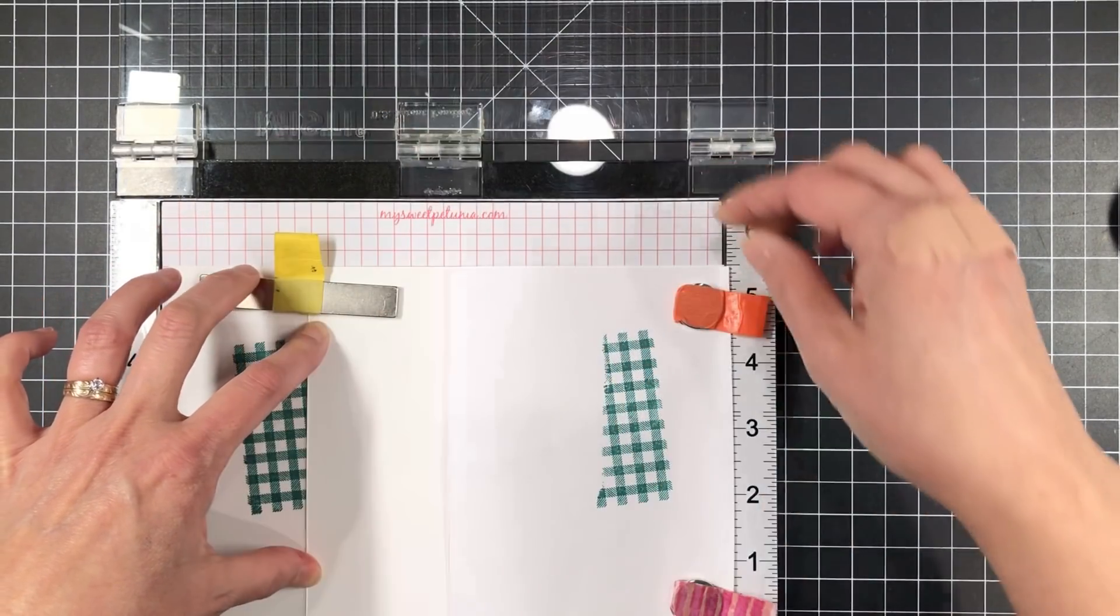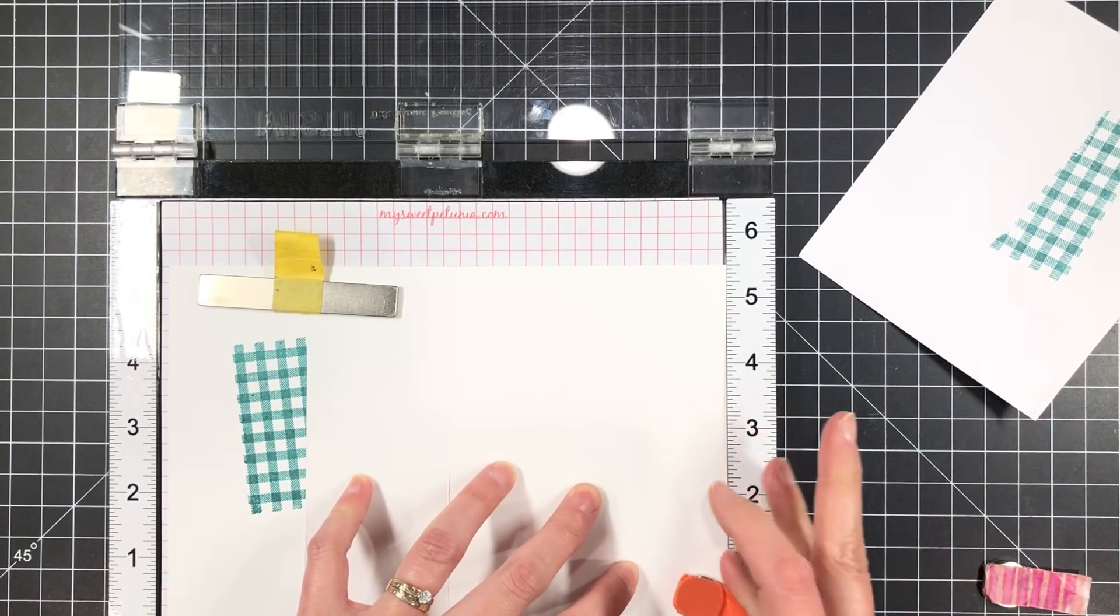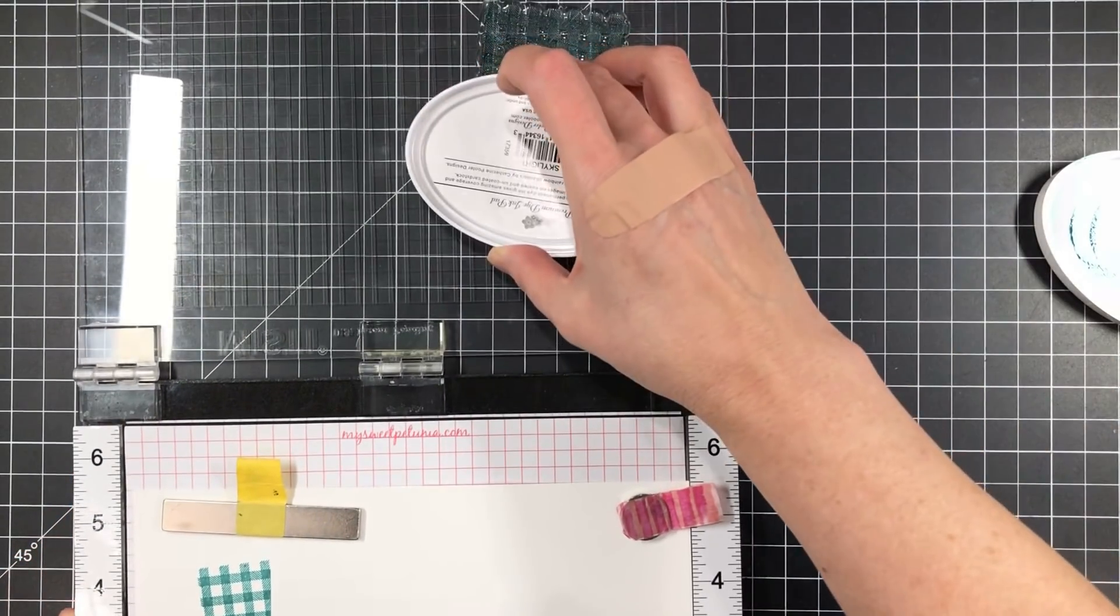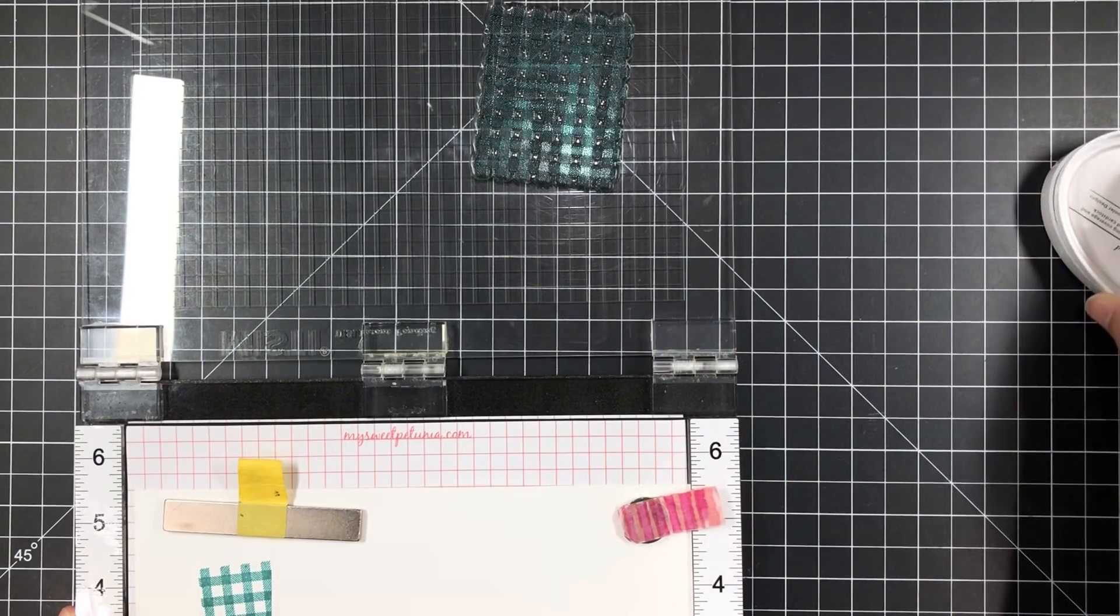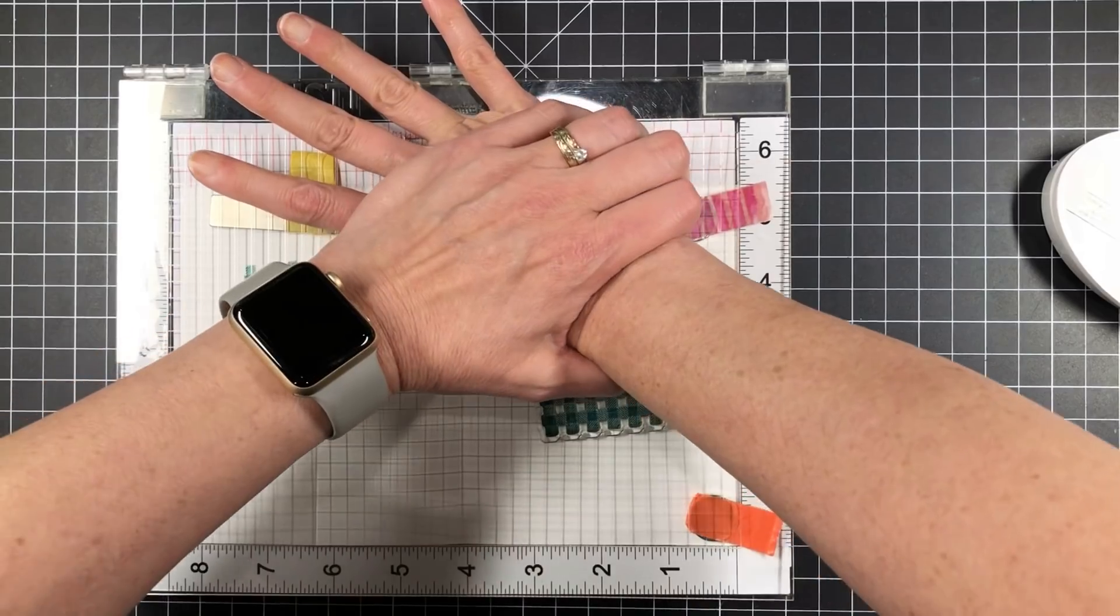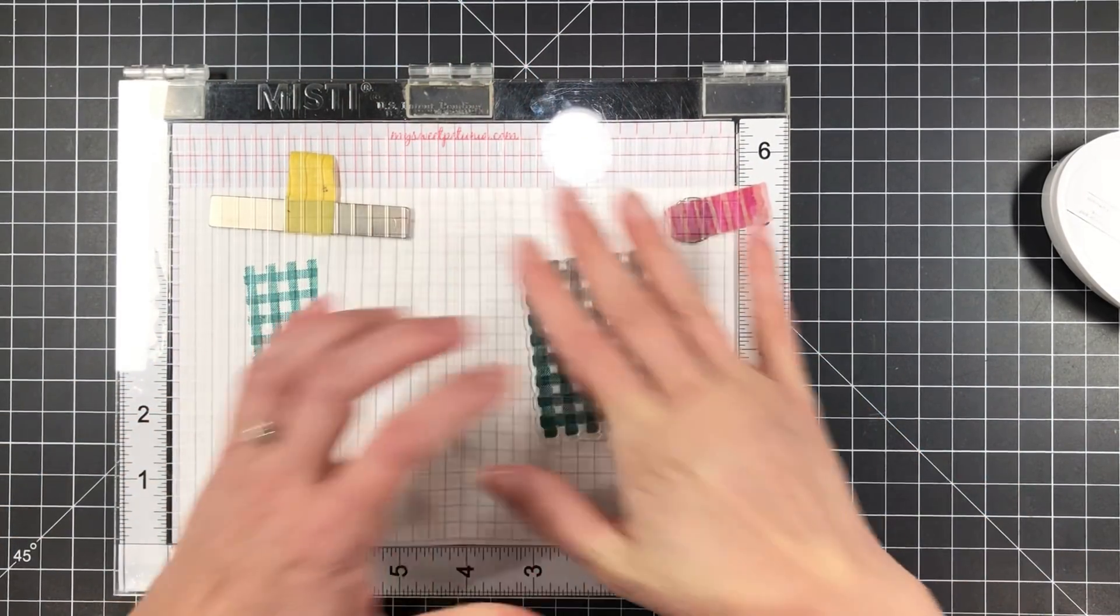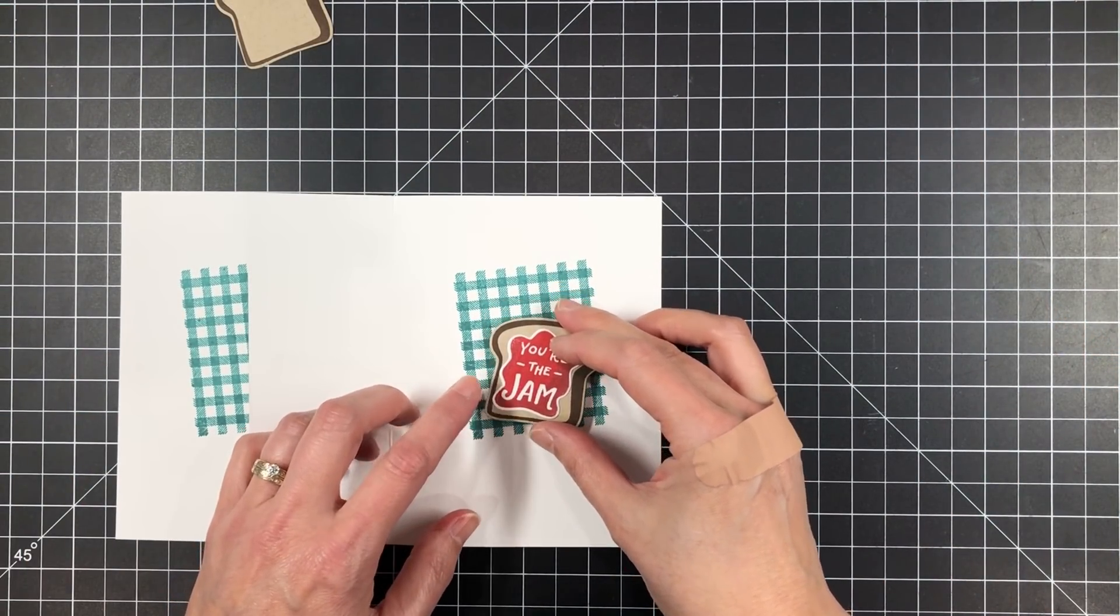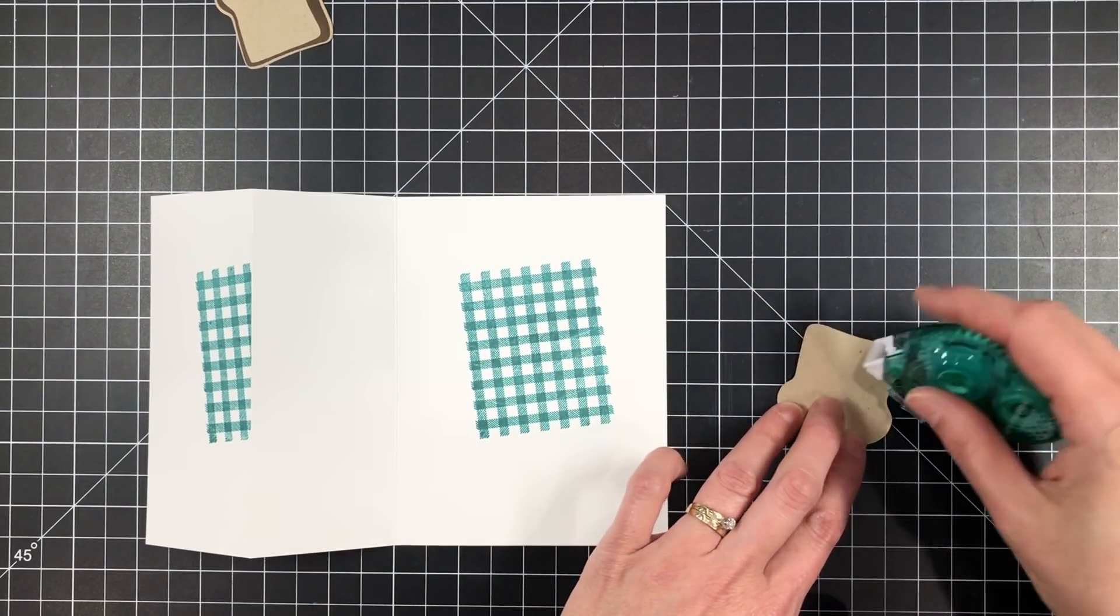So now I'm going to open that up. I'm not moving anything. I'm just opening it up and I'm going to re-anchor the card front with that bar magnet. And then I'm going to remove the scratch paper and bring back my little magnets there to hold down the inside back of the card. I'm going to re-ink that mini gingham pattern again and re-stamp the same image right there inside the card. And this way, when you close the card, the plaid on the front and the plaid on the inside are going to line up perfectly. I mean, it is spot on. And that's the great thing about using the Misti for something like this.